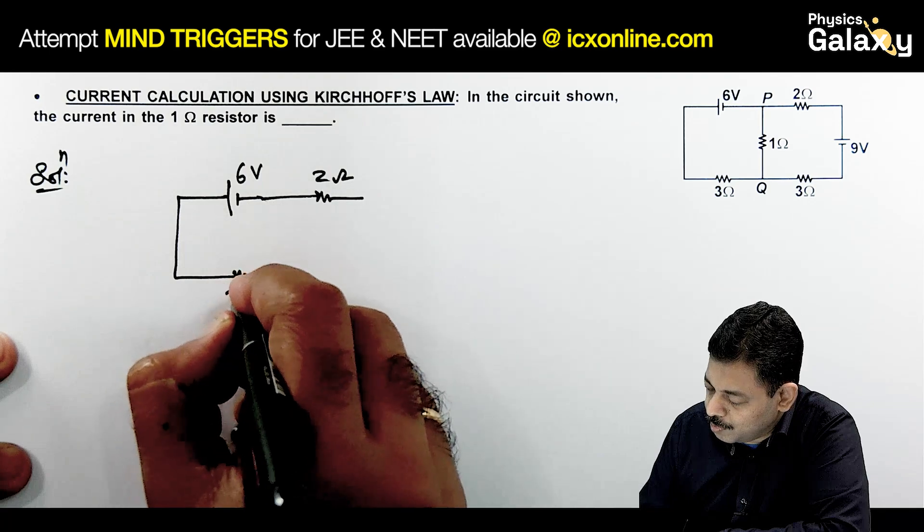There is one more case on current calculation using Kirchhoff's law. In the circuit shown, we need to calculate current in 1 ohm resistance. Again there is a multi-battery circuit. Redrawing the circuit: 6 volt battery with 2 ohm resistance, a 3 ohm resistance with 1 ohm resistance connected across, and a 3 ohm resistance connected with 9 volt battery. We want current through this 1 ohm resistance. Terminal P is at potential 0, here it's 6, and let potential here be x. There's 3 ohm, 2 ohm, 1 ohm here, and 3 ohm here.